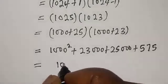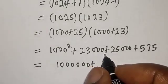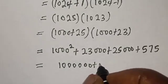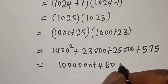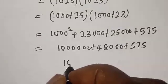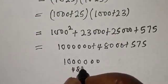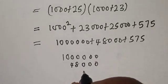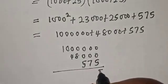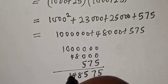1000 square is 1,000,000 plus 23 times 25, which is 575, plus 23,000 plus 25,000, which is 48,000, plus 575. Let's add everything together: 1,000,000, 48,000, and 575. Here is 575, 4, 8, 0, 0, 0, 1. One million forty-eight thousand five hundred seventy-five.